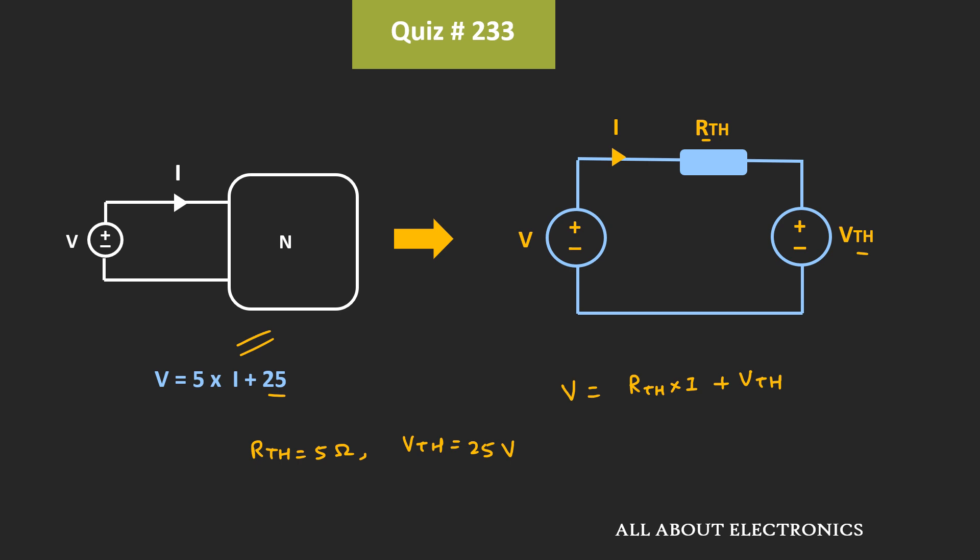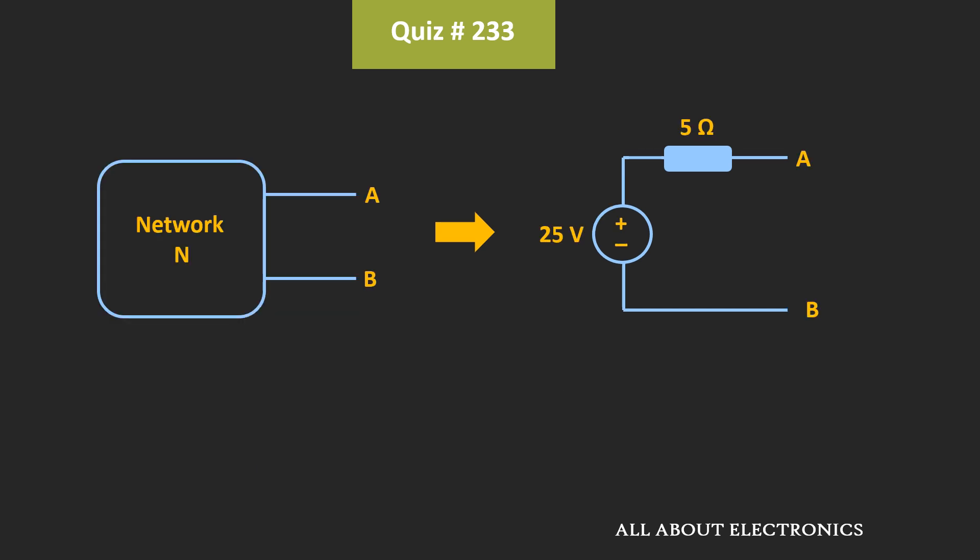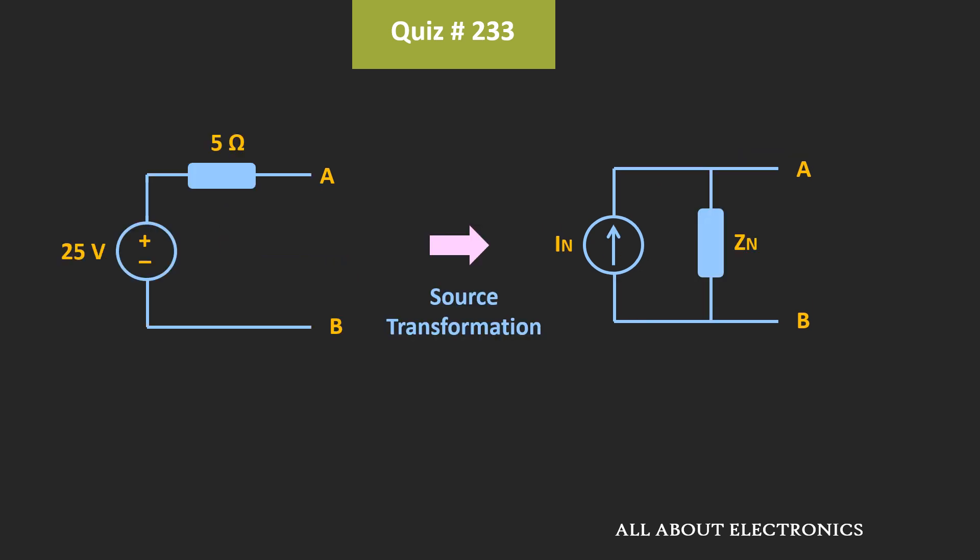So from this, we can say that for the given network N, the Thevenin's equivalent voltage is equal to 25V, while the Thevenin's equivalent resistance is equal to 5Ω. And using the source transformation, it is possible to convert this Thevenin's equivalent circuit into the Norton's equivalent circuit.